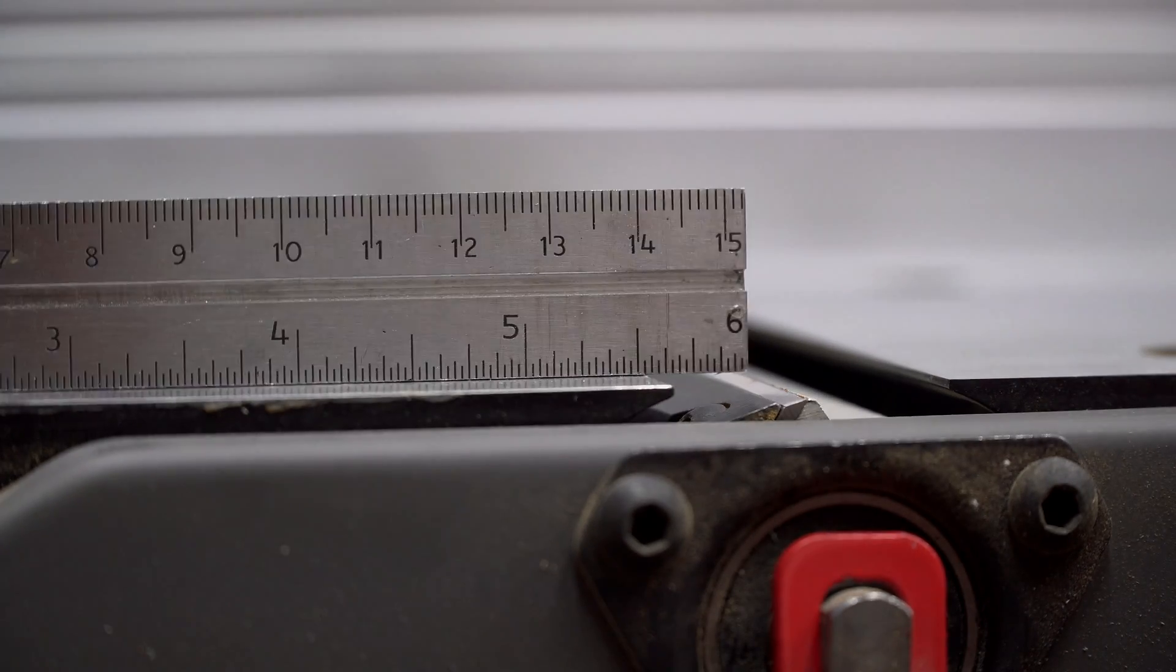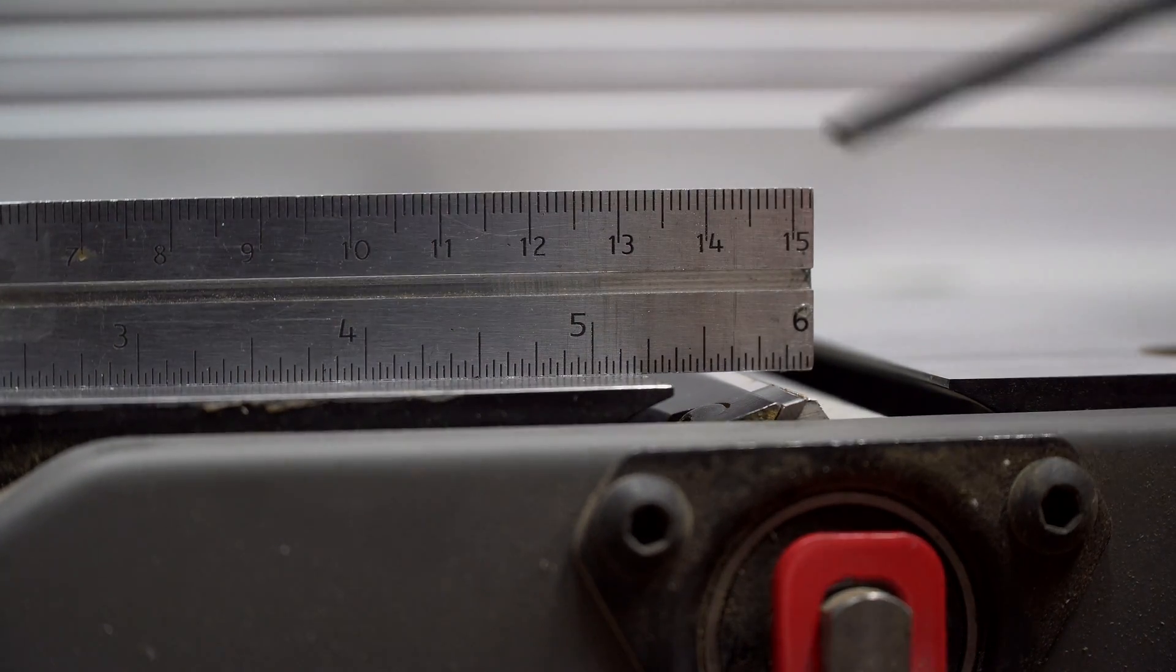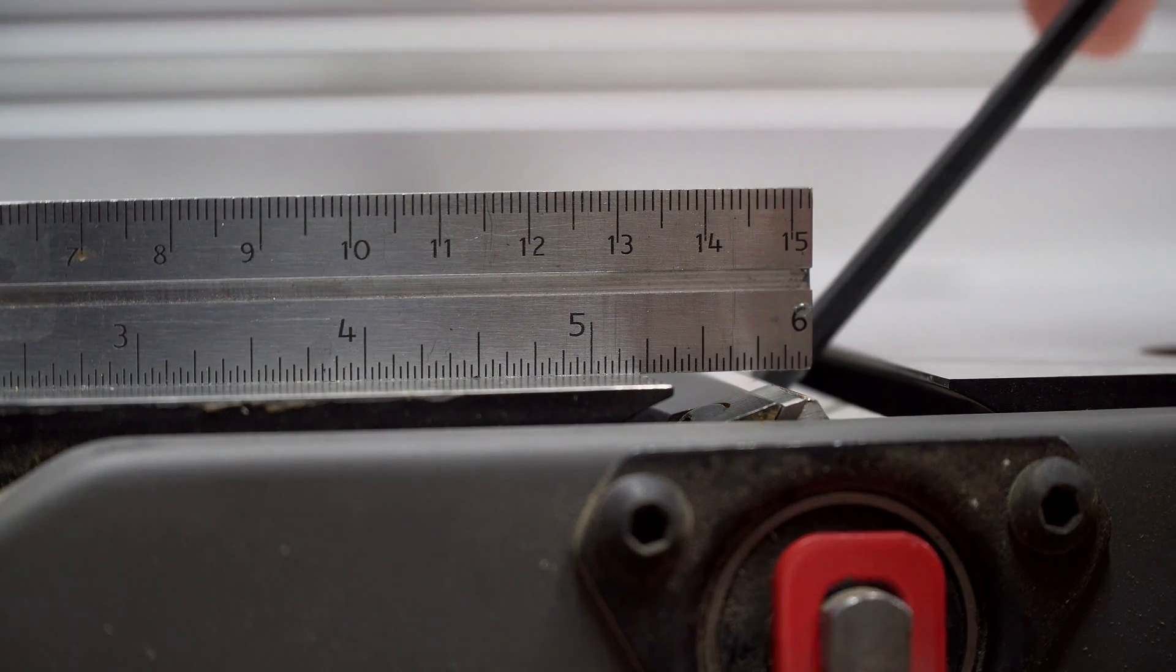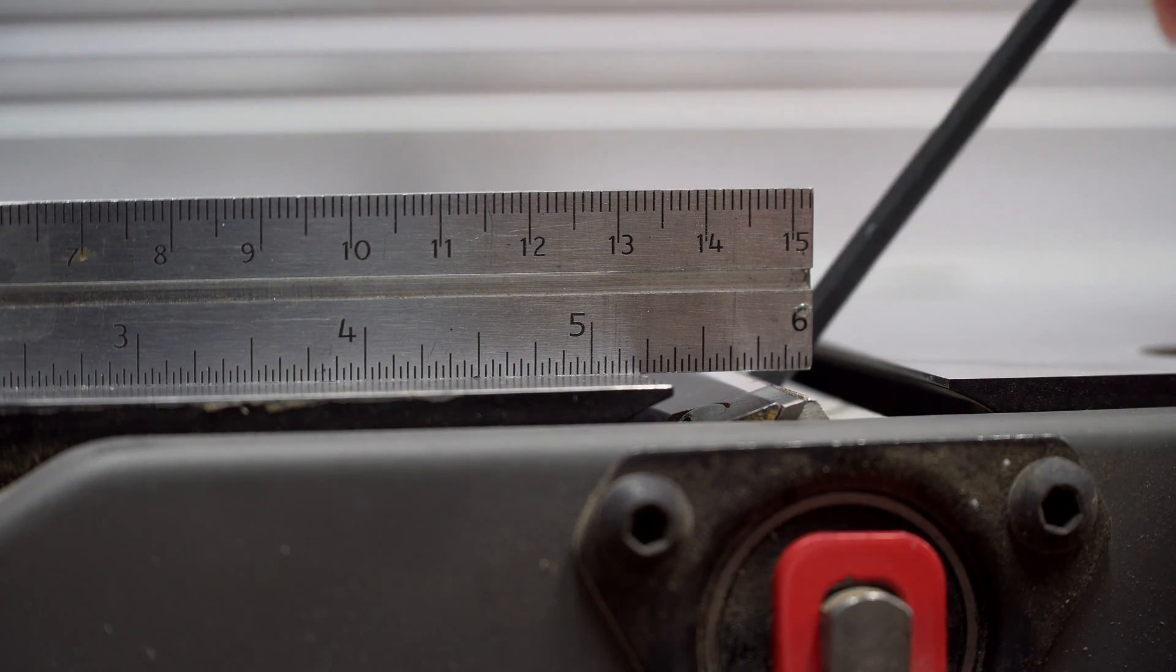Set a metal ruler on the outfeed table so that it hovers over the blade near the cutter headlock. Then using the same allen wrench, turn the closest set screw to raise or lower that end of the blade.